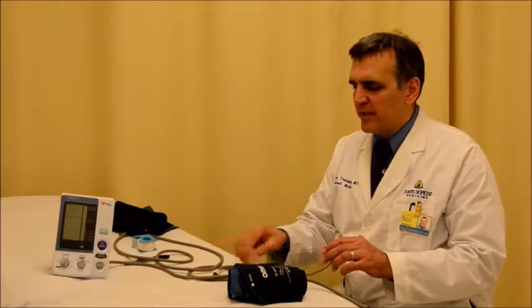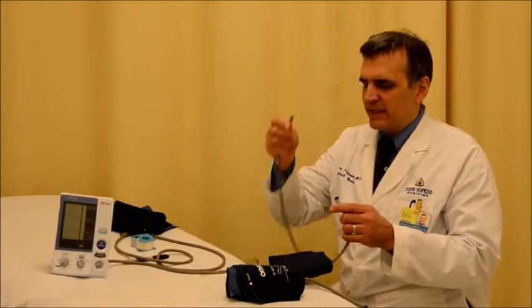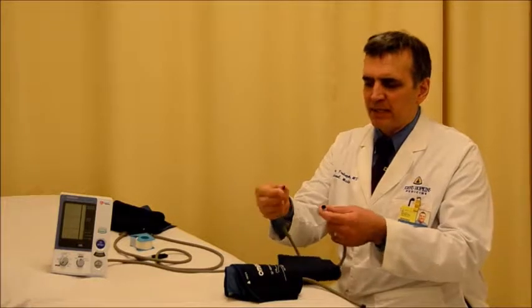There are four different cuff sizes with the Omron 907. There's a small, medium, large, and extra large. The small, medium, and large have tubing that has a black plastic coupling in the middle of it.